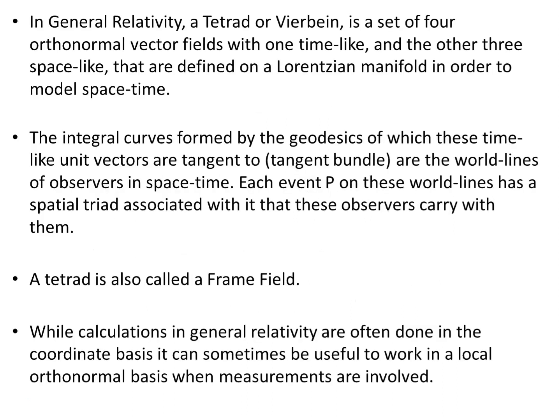In general relativity, a tetrad — or in German, a Vierbein — is a set of four orthonormal vector fields with one timelike and the other three spacelike axes, defined on a Lorentzian manifold in order to model spacetime. The integral curves formed by the geodesics, of which these timelike unit vectors are tangent to — the tangent bundle — are the world lines of observers in spacetime. Each event p on these world lines has a spatial triad associated with it that these observers carry with them.